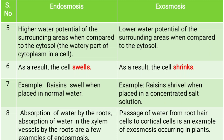Fifth point: in endosmosis, the water potential of the surrounding areas is higher when compared to the cytosol. In exosmosis, there is low water potential of the surrounding areas as compared to the cytosol, and because of that exosmosis occurs.